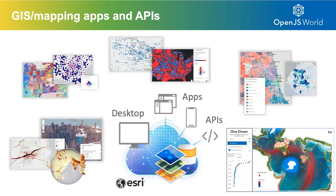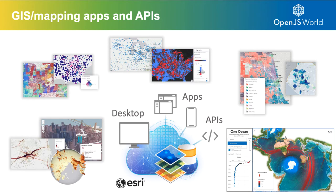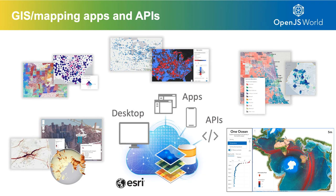Esri builds GIS software — that's short for Geographic Information Systems — which is a fancy way of saying we build mapping software and a variety of spatial analysis tools for desktop, mobile, and web clients. We also provide dozens of APIs for developers to extend our software and build their own customized applications. This chart on this slide is a little overly simplistic; we do build all of these apps, but we expose a variety of APIs for a developer community.